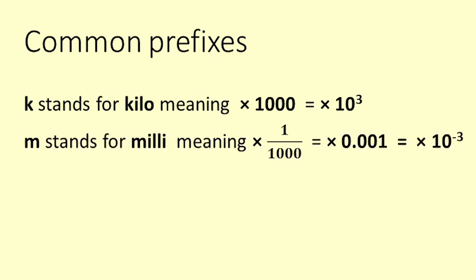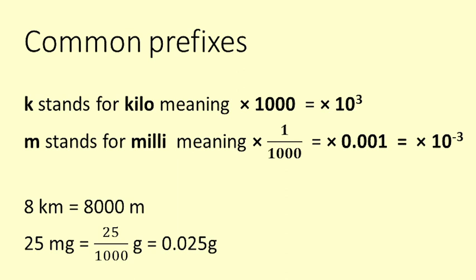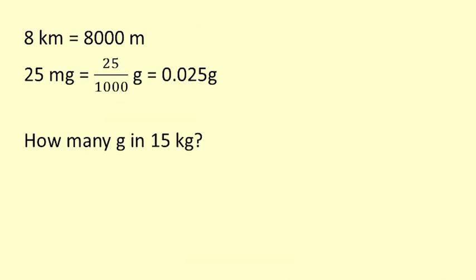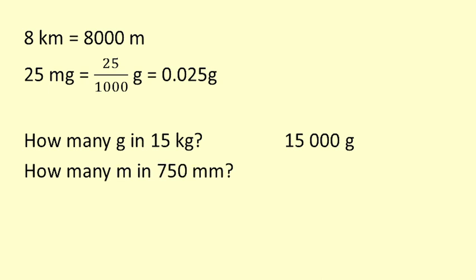Note that milli is a lowercase m. 8 km is 8 kilometres, which is 8000 m. 25 mg is 25 milligrams, which is 0.025 g. To get from grams to kilograms we multiply by a thousand, so 15 kg is 15,000 g. 750 mm is 0.75 m.